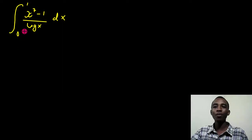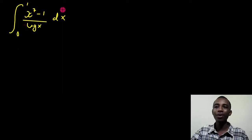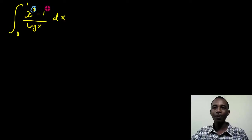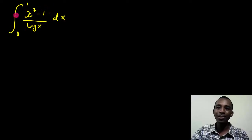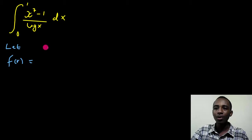All right, of course, this technique works even if this was not a 7. So the first thing I'm going to do is to try and generalize this now. Now I'm going to actually let f of k to be equal to the integral from 0 to 1 of x to power k minus 1 divided by log x dx,